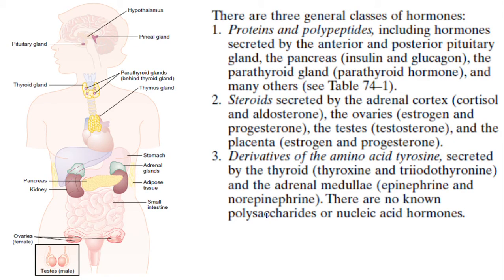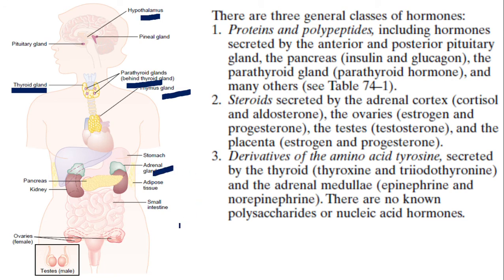Which are the different endocrine glands in the body? The hypothalamus is the master gland. Then we have the pituitary and the pineal. Coming down, we have the thyroid gland, and surrounding them are the parathyroids. Then there is the thymus, the pancreas, and just above the kidney we have the adrenal glands. The kidney itself is not a gland. Then we have the ovaries in females and the testes in males.